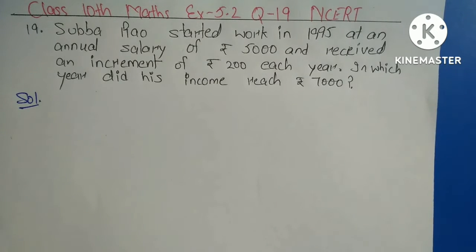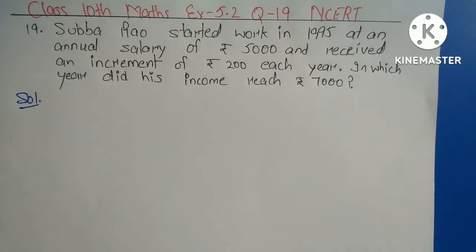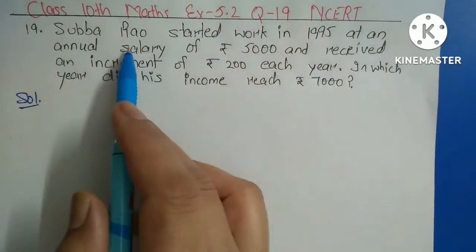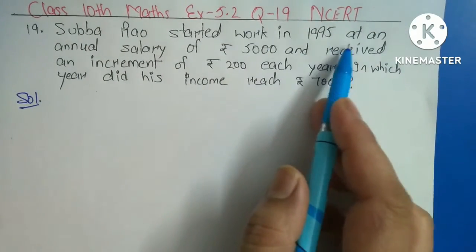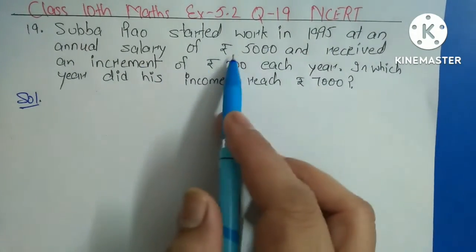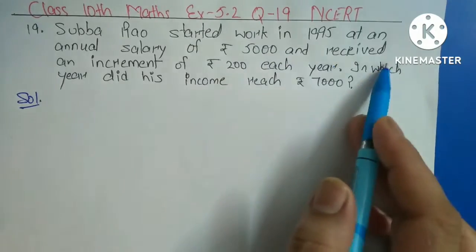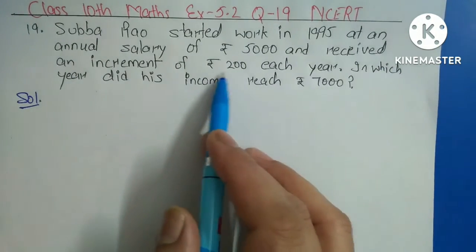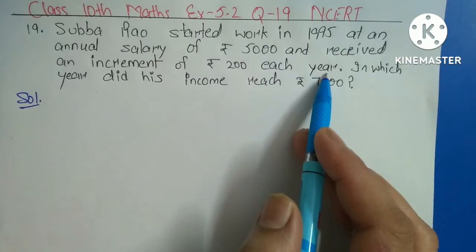Hello everyone, today we will start question number 19 of exercise 5.2, chapter Arithmetic Progression. What the question says, let's read. Subha Rao started work in 1995 at an annual salary of Rs. 5,000 and received an increment of Rs. 200 each year.